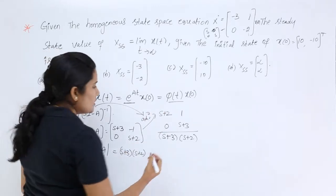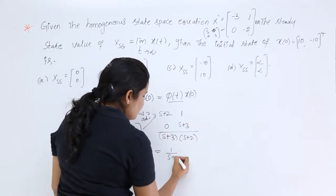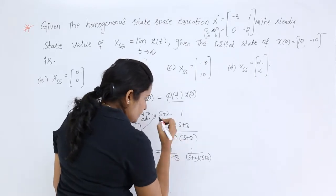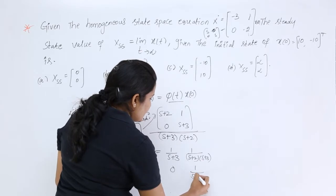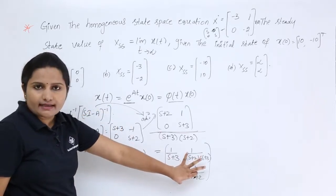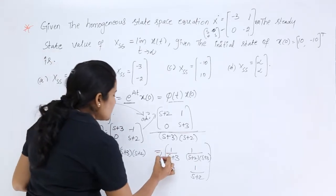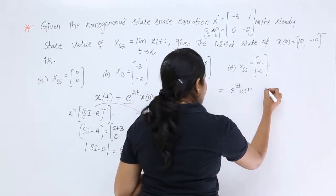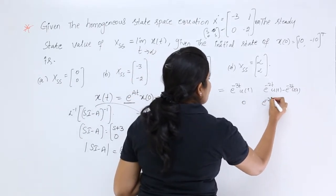So (sI - A) inverse is: [(s+2)/((s+2)(s+3)), 1/(s+3); 0/((s+2)(s+3)), (s+3)/((s+3)(s+2))], which simplifies to [1/(s+3), 1/(s+3); 0, 1/(s+2)]. Taking the inverse Laplace transform gives φ(t) = [e^(-3t), e^(-2t) - e^(-3t); 0, e^(-2t)].